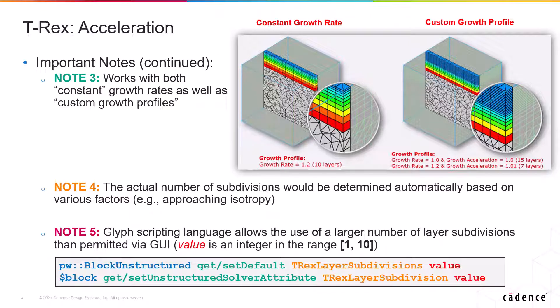Finally, and as a more advanced option, our Glyph scripting language actually lets you use layer subdivisions as large as 10 as opposed to a maximum of 5 that is permitted via the graphical user interface. Again, this is something that you can play with for your specific application to see how much performance gain you can achieve with various numbers of layer subdivisions.